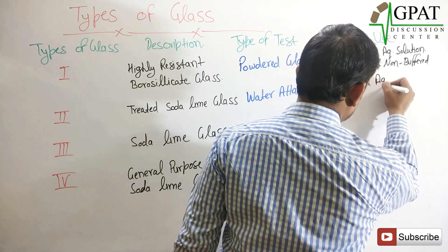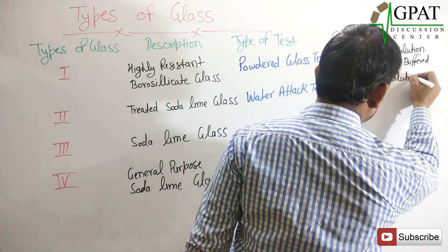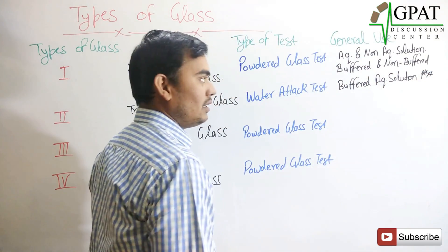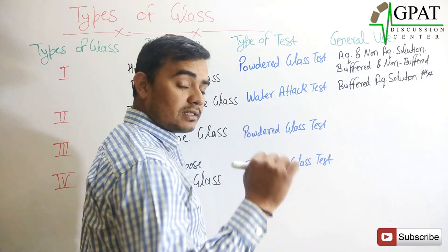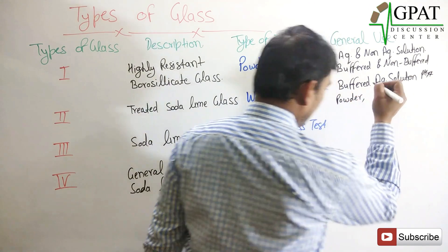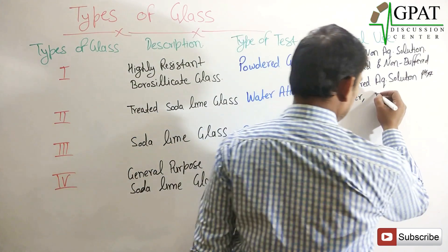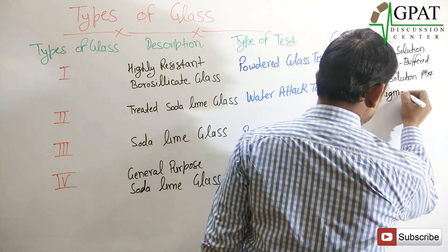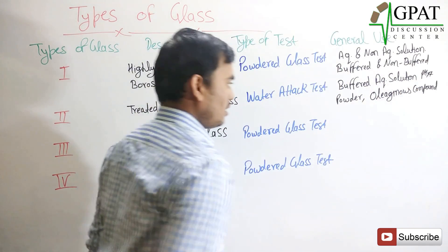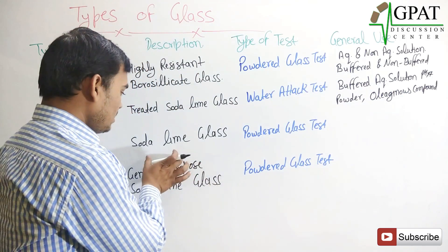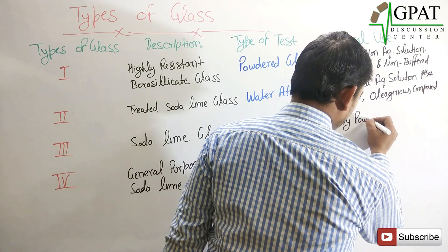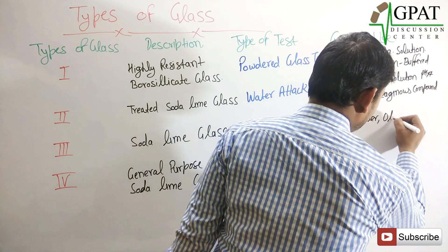The second type — treated soda lime glass — is used for buffered aqueous solutions where the pH should be less than 7. It is also used for powders and oleaginous substances. Type 3 — soda lime glass — is used for dry powder and oleaginous compounds.